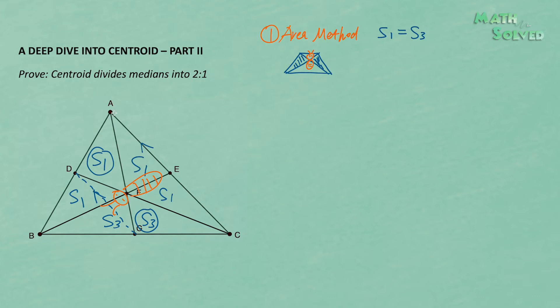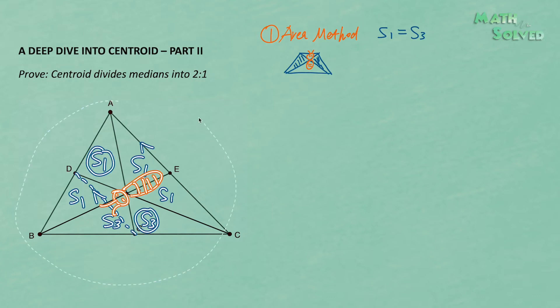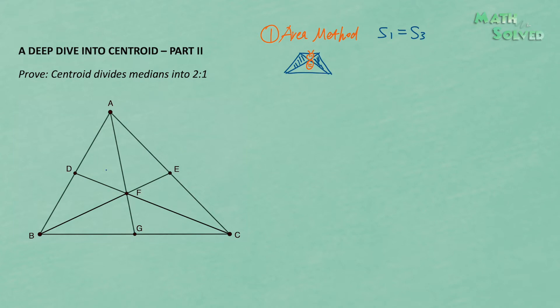So in triangle ABC with all three medians, we have six small triangles, and all six triangles have the same area. Let's use S1 as the notation for that area. Some students might be wondering how proving S1 equals S3 is helpful in proving that the centroid divides the median into a 2-to-1 ratio. This is where the area method comes in.